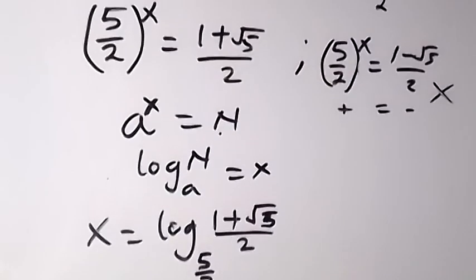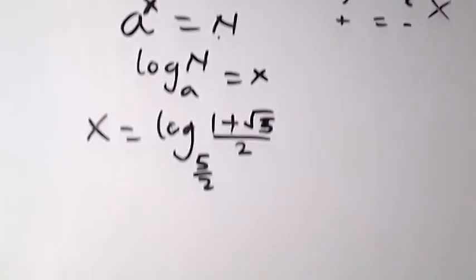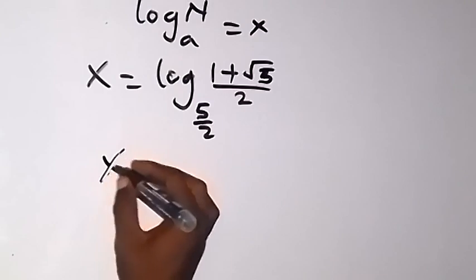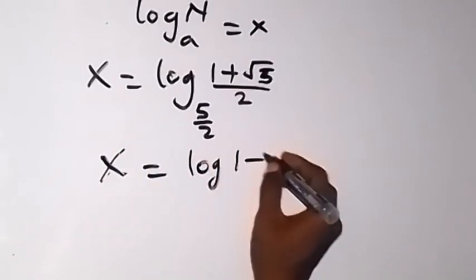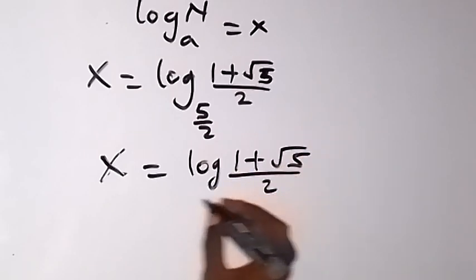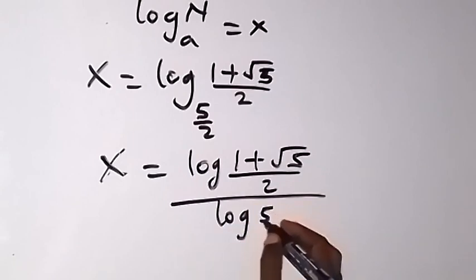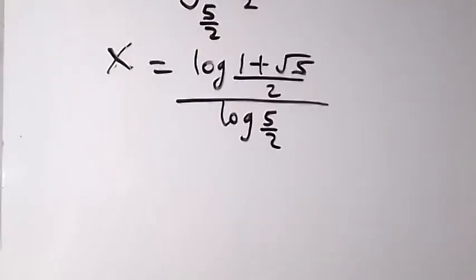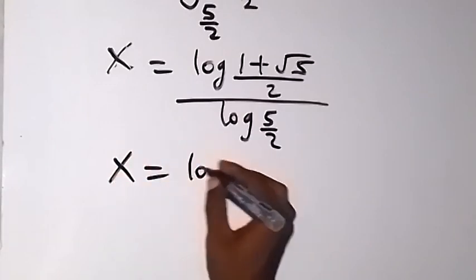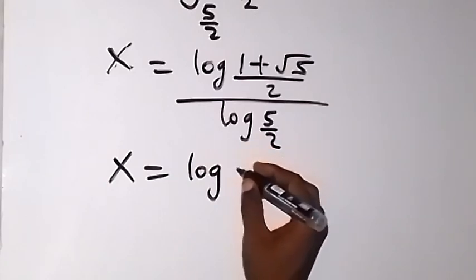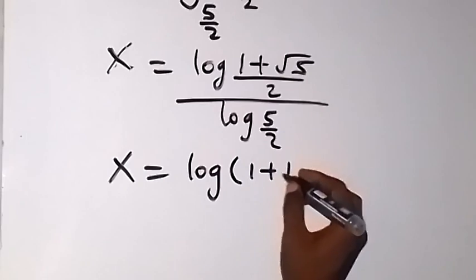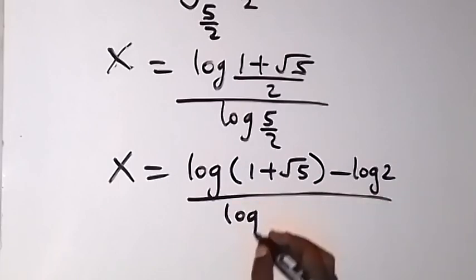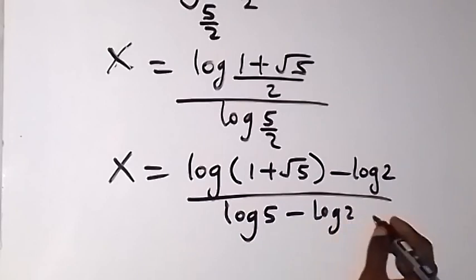This can be written again using the change of base formula as x equals log(1 plus root 5 over 2) divided by log(5 over 2). Further expanding using log quotient rules, we get x equals log(1 plus root 5) minus log 2, all divided by log 5 minus log 2. And this is the value of our x.